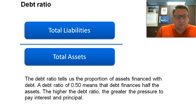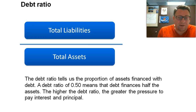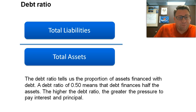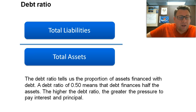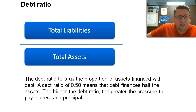The debt ratio tells us the proportion of our assets that are financed with debt. So a debt ratio of 50% — for example, $2 million in assets and $1 million in debt — means that we have financed half of our assets with debt. The higher the debt ratio, the greater the pressure to pay interest and principal.